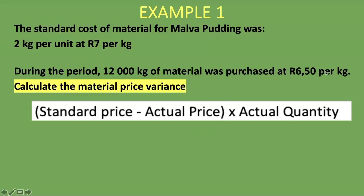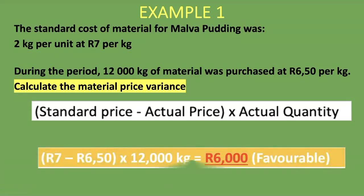Our actual price is 6 rand 50, because we purchased 12,000 kg at 6 rand 50 per kg. So: standard price 7 rand minus actual price 6 rand 50, multiplied by the actual quantity of 12,000 kg. That gives us 6,000 rand — and it's favorable.